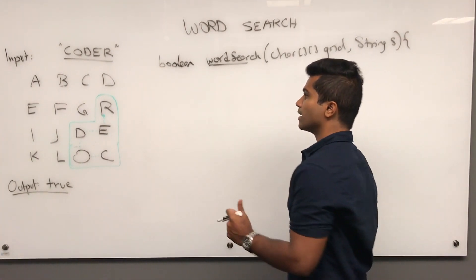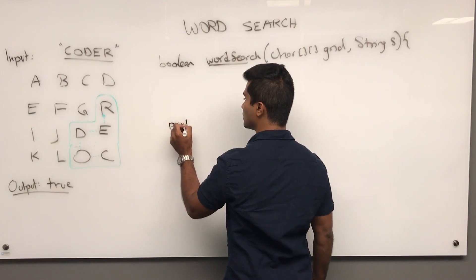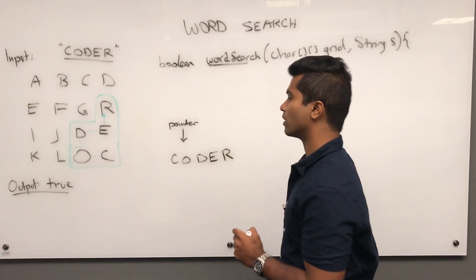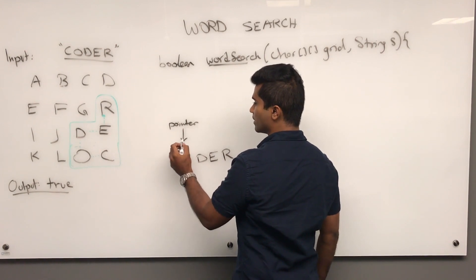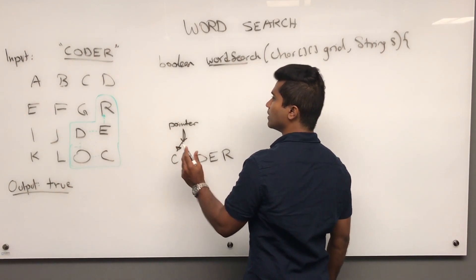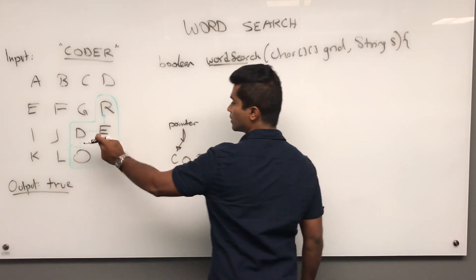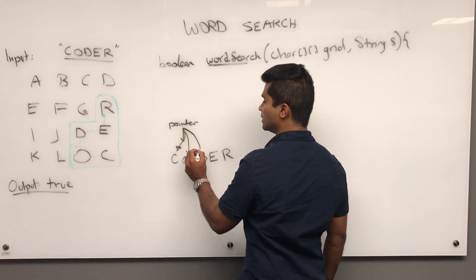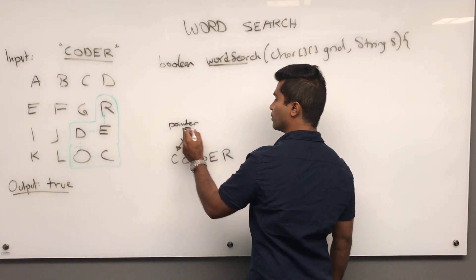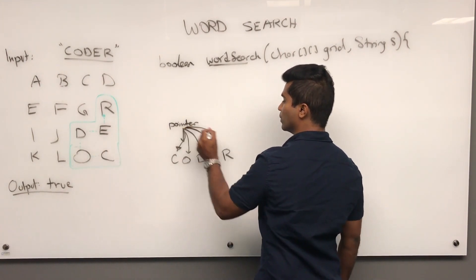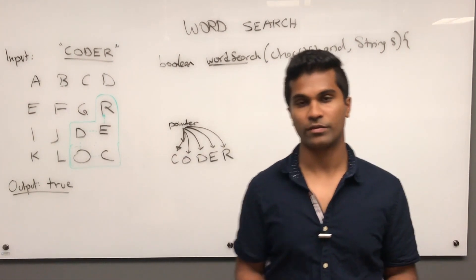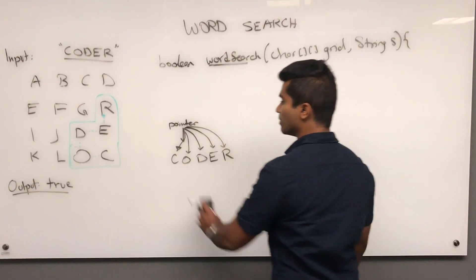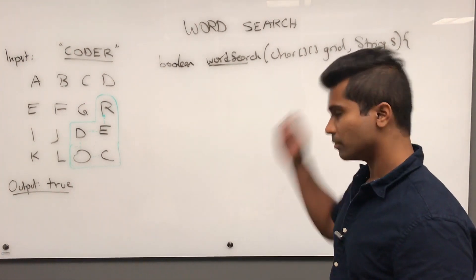For recursive searching problems I like to use some additional variables to keep track of state. For this problem, we can have a pointer that tracks which position in the word we've successfully found so far. When we find 'C' we're at position zero, then 'O' at position one, 'D' at two, 'E' at three, and when the pointer finally reaches 'R' — the final letter — we return true. We'll use an integer for that and pass it in as a variable.